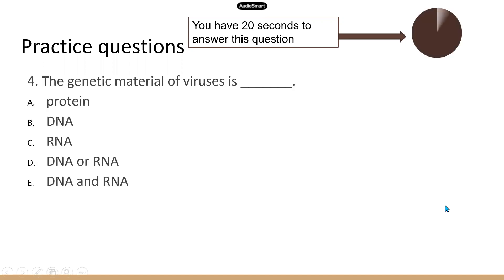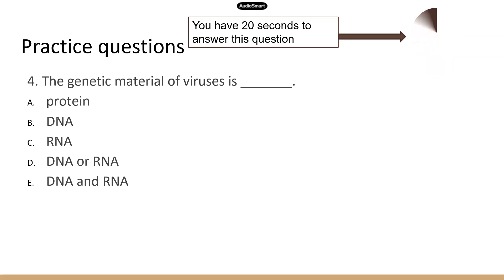Question four. The genetic material of viruses is either DNA or RNA. So some viruses have DNA and others have RNA. The correct answer is D.